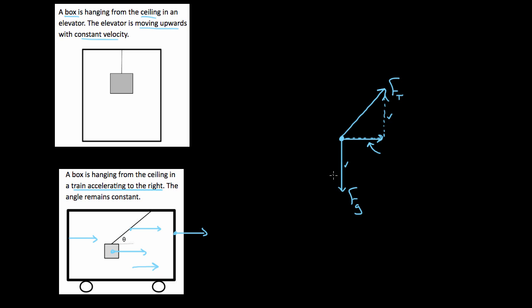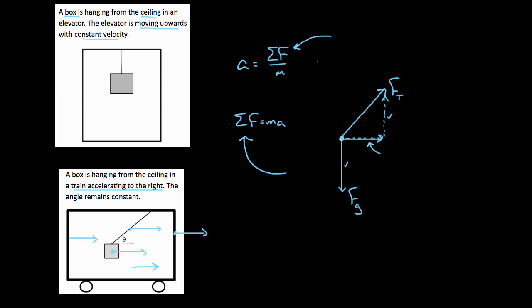Hopefully that shows you the forces you might encounter and which direction they go. When you plug into Newton's second law — F_net = ma — you'll have a better shot at identifying all the forces, knowing whether they're positive or negative, and avoiding phantom forces that don't belong in the equation.